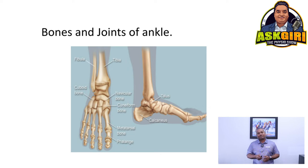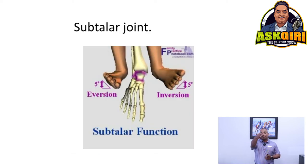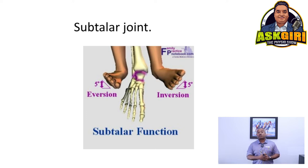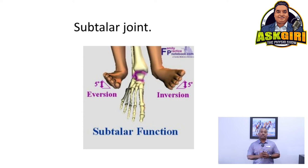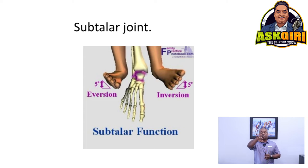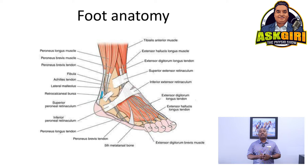The subtalar joint provides inversion and eversion movement — not the ankle joint itself. That's why subtalar mobility is very important. When assessing ankle sprain patients, we check the talar tilt: less than six degrees is normal, more than six degrees indicates instability. We also assess the relationship of the talus to the tibia, fibula, and calcaneum, and check all surrounding ligaments.